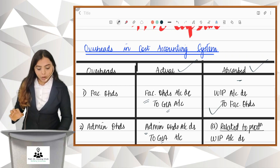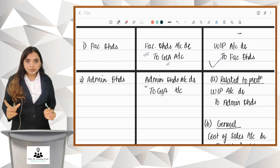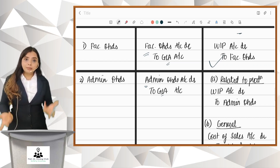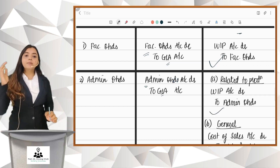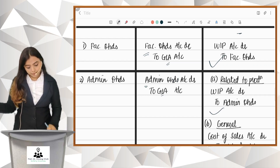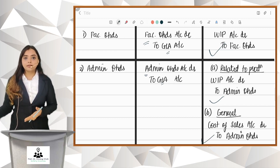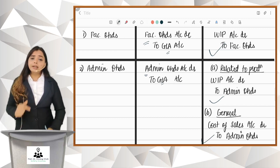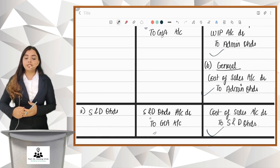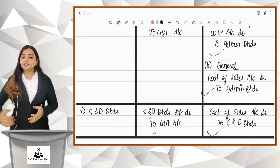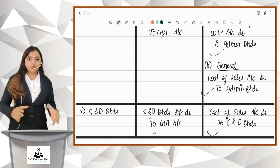For admin overheads, it may be related to production or it may be general. Admin overheads related to production will be charged to production: WIP Ledger Control Account debit to Admin Overheads. For general admin overheads, the entry will be Cost of Sales to Admin Overheads. Selling and distribution overheads will also be charged as Cost of Sales to Selling and Distribution Overheads. So the ones related to production are charged to WIP, and the ones not related to production are charged to cost of sales.